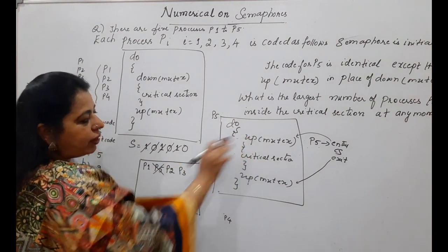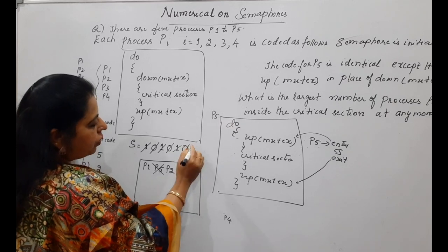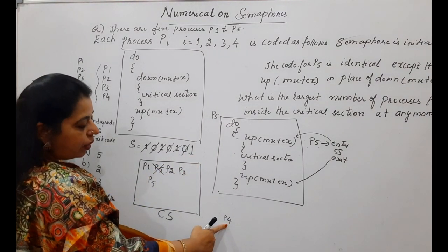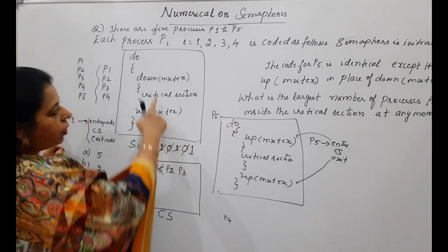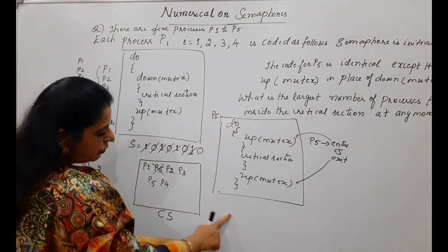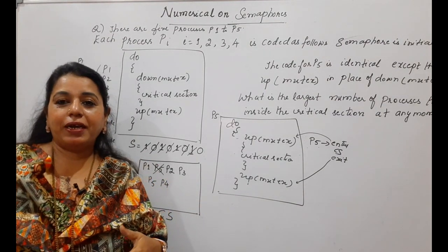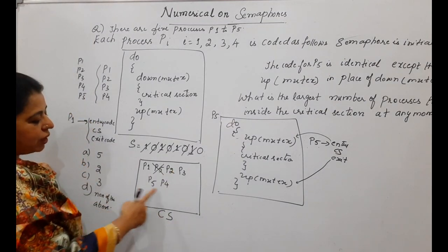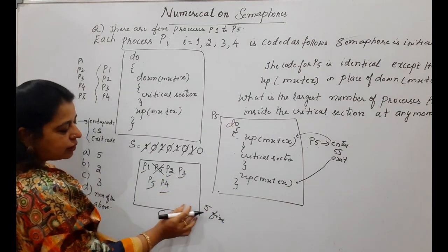Once P3 enters, we remove P3 from the block list. Now the semaphore value is 0 again and P4 is still unable to enter. We apply the same trick again — make P5 enter again. P5 performs the up operation on mutex, the semaphore value becomes 1, and P5 enters the critical section. As soon as S becomes 1, P4 which was in the blocked state — its while loop condition becomes false — it performs the down operation on mutex, value becomes 0, and P4 enters. So at any moment, P1, P2, P3, P4, and P5 — all five processes can be existing in the critical section.